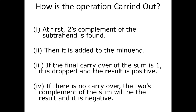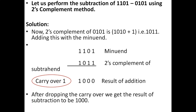If there is no carry out, the two's complement of the sum will be the result, and it is negative. Let us perform the subtraction of 1101 and 0101. We know 1101 in decimal means 13 and 0101 in decimal means 5. This is the minuend and this is the subtrahend. To find the two's complement of 0101, first invert the pattern to get 1010 — that's the one's complement — then add 1 to get 1011.